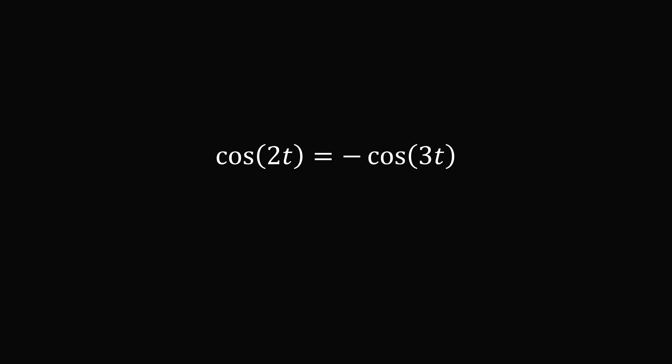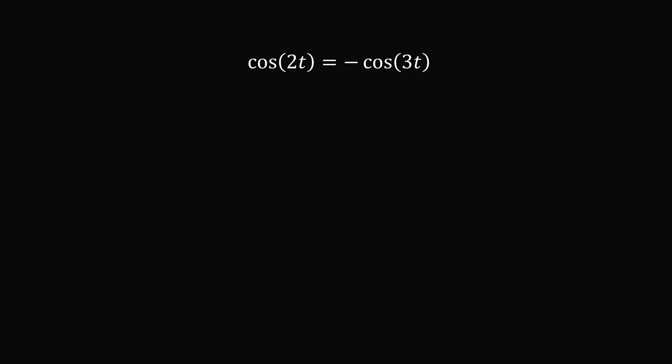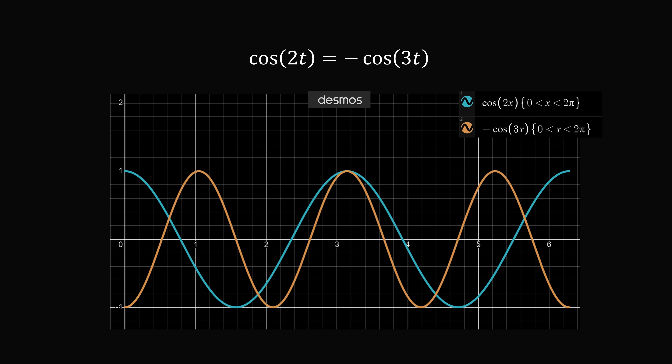To get started, you might graph out these two equations and see where they intersect. It's a very straightforward thing to do in a tool like Desmos, and then you can just click on the different points of intersection, and you'll get that there are five different solutions: pi over 5, 3 pi over 5, pi, 7 pi over 5, and 9 pi over 5. So if you have access to a graphing calculator, you could solve this very easily, but it doesn't exactly give you an understanding of why this is true. So let's go through the long way to solve the problem.